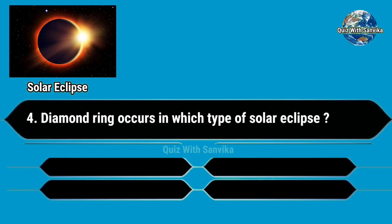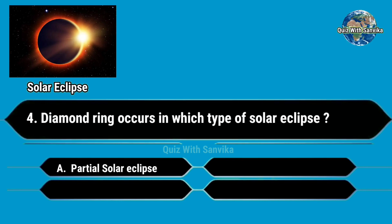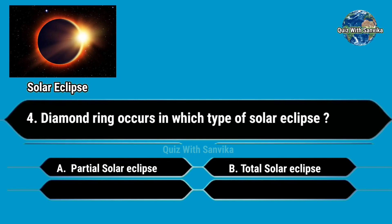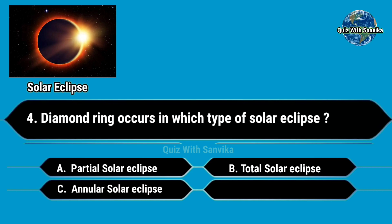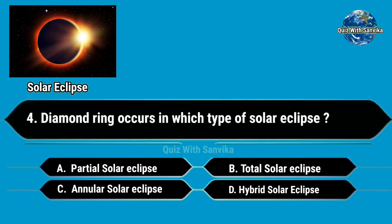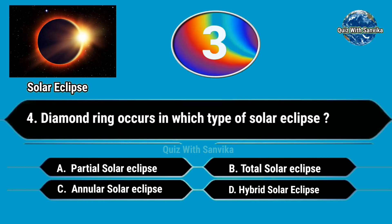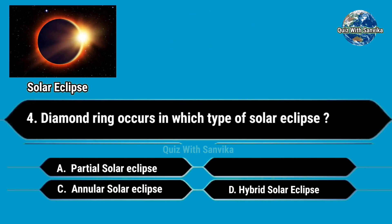Diamond ring occurs in which type of solar eclipse? Options are A. Partial solar eclipse, B. Total solar eclipse, C. Annular solar eclipse, and D. Hybrid solar eclipse. Answer is B. Total solar eclipse.